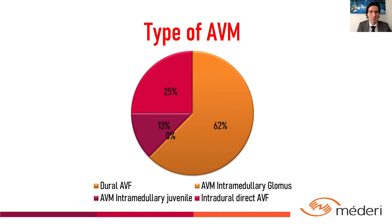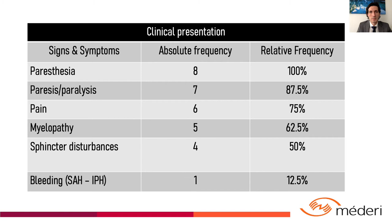We also present a case of an Intramedullary Juvenile AVM. The most frequent signs and symptoms of presentation were paresthesia, paresis or paralysis, pain, myelopathy, and sphincter disturbances.